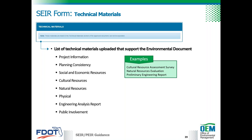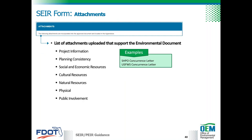Once technical materials have been uploaded while preparing the sections, they'll be listed at the end in the technical materials section. New ones can also be added there if not entered earlier. These documents vary depending on the impacts of the project and include the natural resources evaluation, the cultural resources assessment survey report, and the preliminary engineering report. Although listed there, the documents themselves are only included in the SWEPT project file. Similarly, uploaded attachments will be listed in the attachment section, with examples including concurrence letters from SHPO and the U.S. Fish and Wildlife Service.